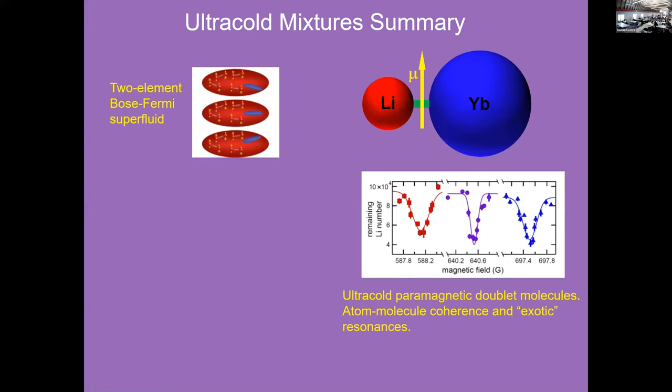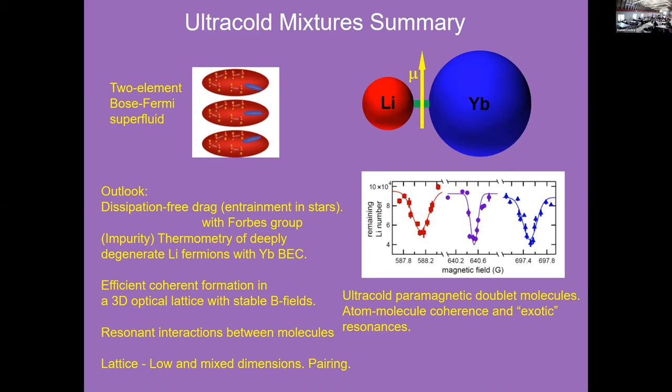Let me just leave you then with my summary slide. I think we're probably going to have time. So this is my summary slide for the mixture system. And as outlook, when you say that for the two-element superfluid, one of the interesting connections one has is dissipation-free drag. Superfluid flows through another and carries it along with it without dissipation. So this is sort of a current coupling. And together with Michael Forbes, we're figuring out how one can see this effect. It also relates to something called entrainment in stars. There's a few other things that I've listed over here.